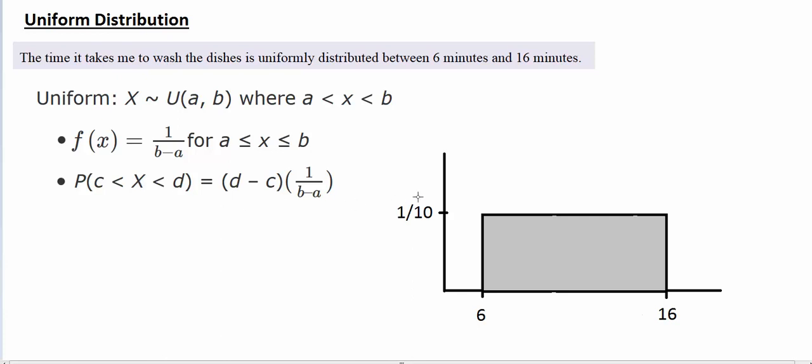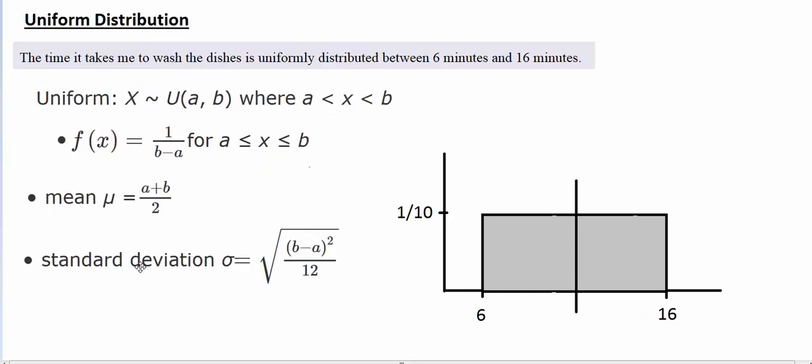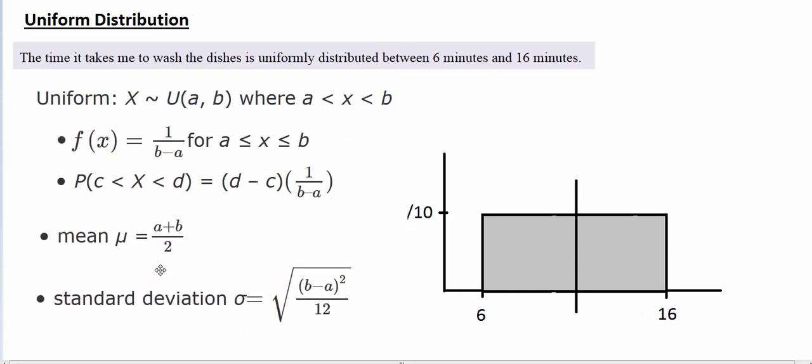So the mean is simply going to be the midpoint of the distribution - the middle point here. We'll basically just use our midpoint formula: the bottom of our interval plus the top of our interval divided by 2.